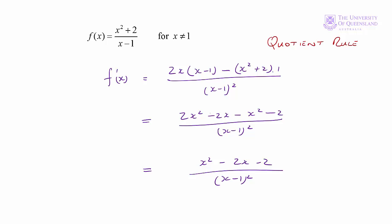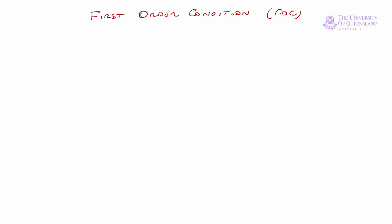Now on to the first order conditions. The first order condition is that the first derivative is equal to 0 — so we're finding a stationary point. That implies the numerator in our first derivative is equal to 0: x squared minus 2x minus 2 equals 0.